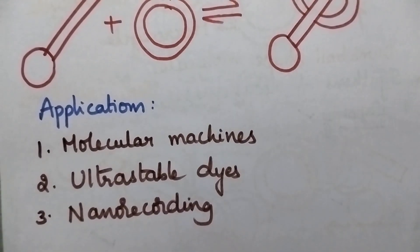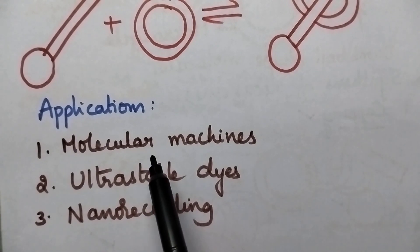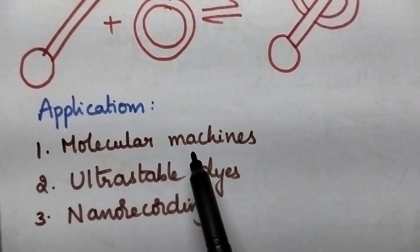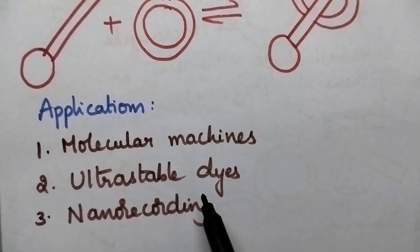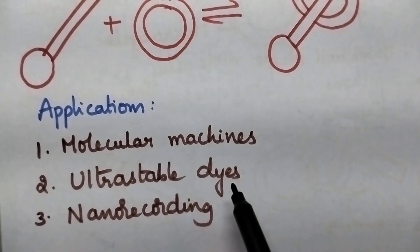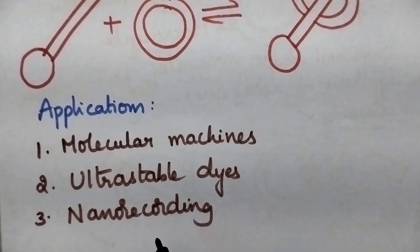Moving to the applications, these rotaxanes are highly useful to design macromolecular machines, also used in ultra-stable dyes, and these rotaxanes are highly useful for nanorecording process.